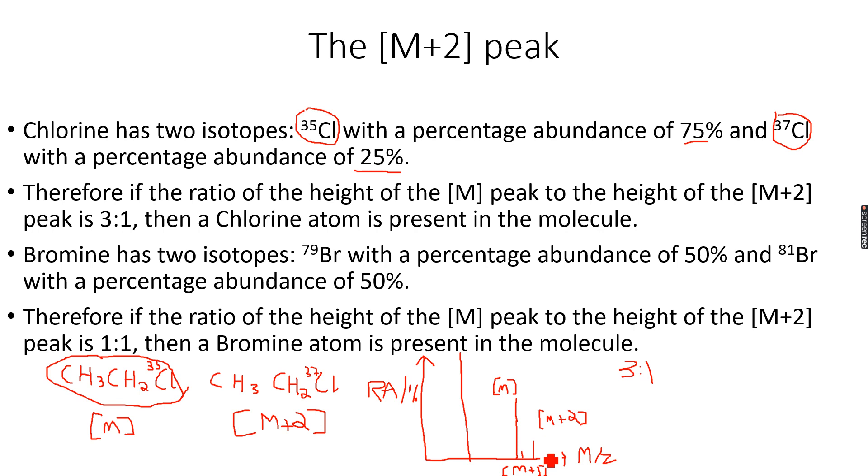So what you can infer from this is that chlorine is present in the molecule. When I see an M peak and an M+2 peak with a height ratio of 3:1, I know that a chlorine atom is present in the molecule.